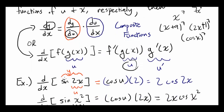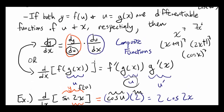In the sine of 2x example, sine of 2x was f of u, and 2x was u. You found the derivative of the entire function with respect to u, which was cosine of u. Then you multiply by the derivative of g of x — that is, u prime — which is 2, to get the final answer. So both notations are practically the same thing.